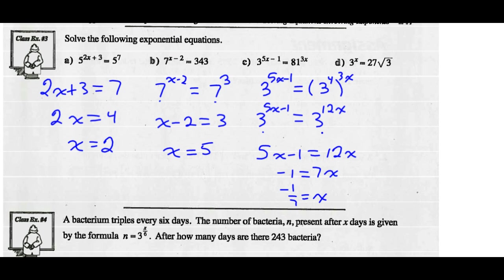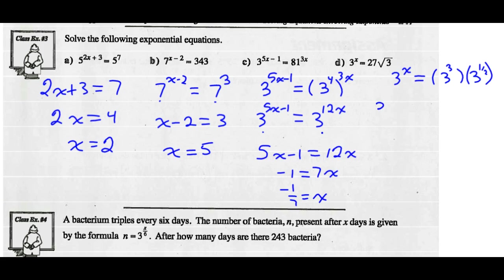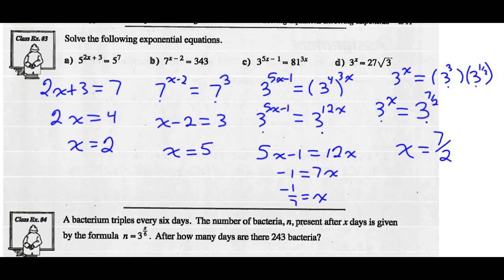Part D: I've got 3 to the x on the left side. I can rewrite 27 as 3 cubed, and I can rewrite the square root of 3 as 3 to the one-half. If I'm now multiplying powers of the same base, my rule says keep the base and add the exponents: 3 plus one-half is 3 and a half, or 7 halves. I've now written both sides with the same base, so I can equate the exponents. x equals 7 halves — that's our solution.